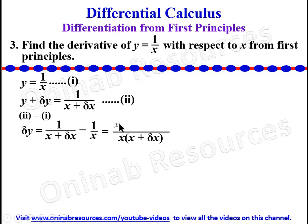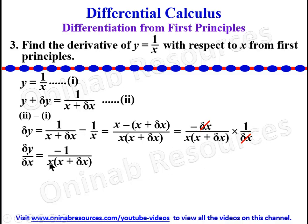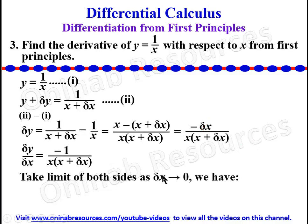The LCM of the denominators is x(x + delta x). So delta y = [x − (x + delta x)] / [x(x + delta x)]. Expanding the numerator: x − x − delta x = −delta x. So delta y = −delta x / [x(x + delta x)]. Now dividing through by delta x is the same as multiplying by 1/delta x, so the delta x cancels, leaving delta y / delta x = −1 / [x(x + delta x)].